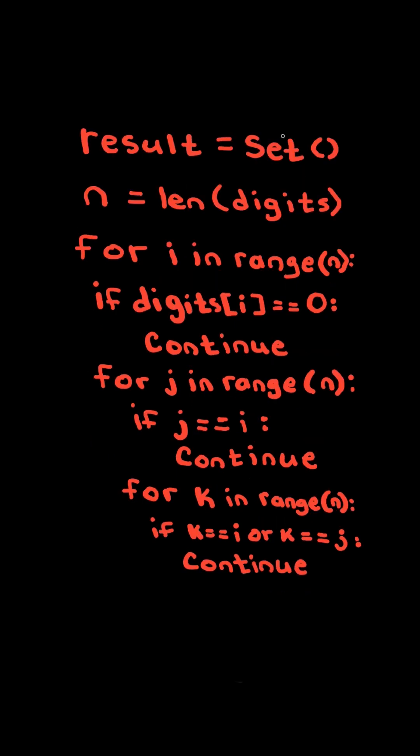We do a similar process for the nested loop k. If the digit at k is not even, we skip it.